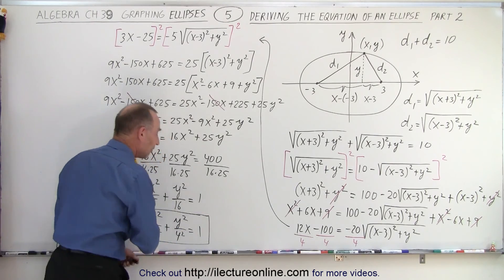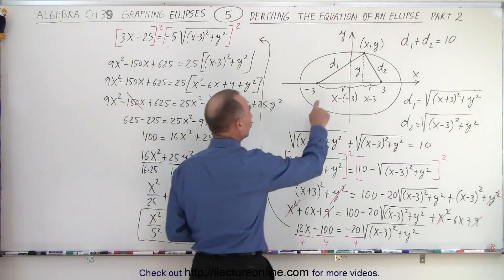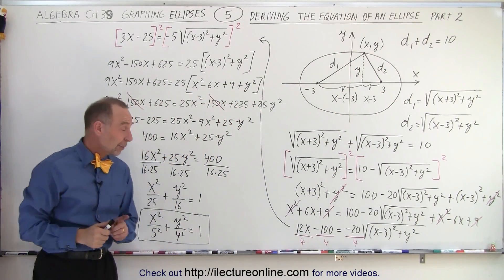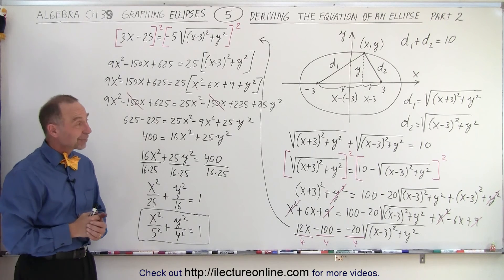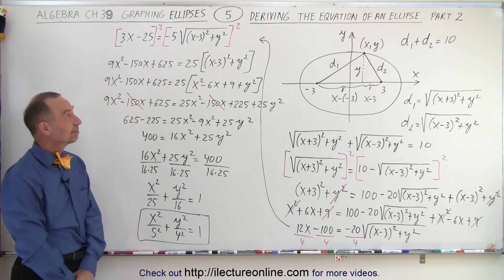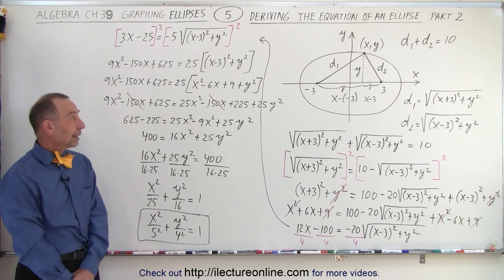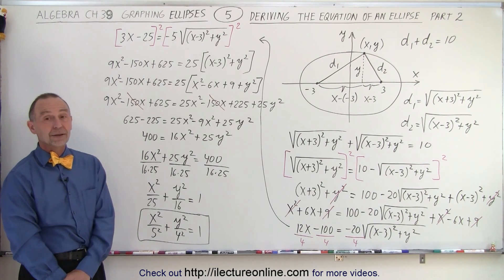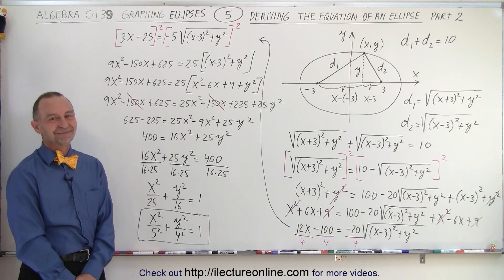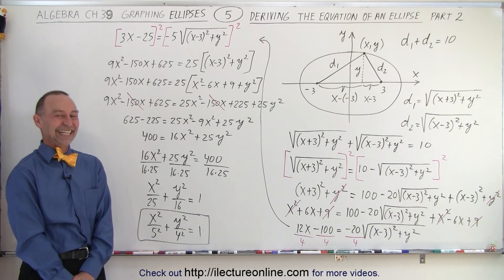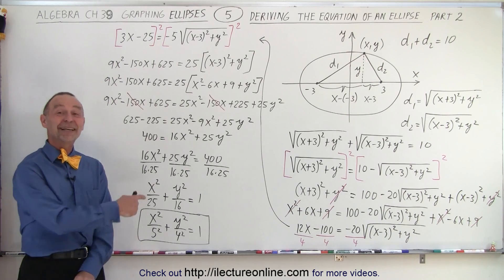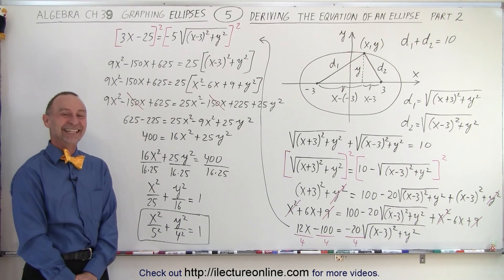And there you go. That's how we find the equation of an ellipse when we're given the two foci and the length of the string used to draw the ellipse — and that's how we end up with the final equation of the ellipse. Kind of interesting, simply by using the distance formula. Well, if we replace the plus 3 and negative 3 by some general numbers, then it would be the general equation. Using specific numbers makes it a little bit easier to work with.